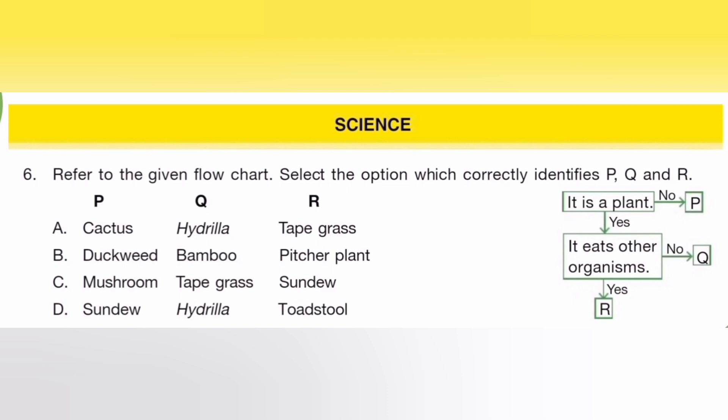Refer to the given flowchart and select the option which correctly identifies P, Q, R. The answer is C. P is mushroom, Q is tip cross X, and R is sundew.